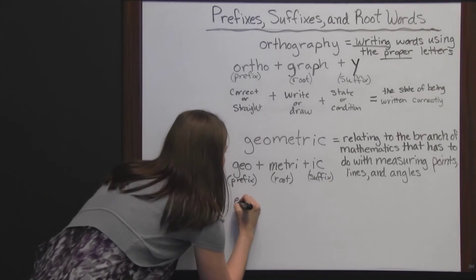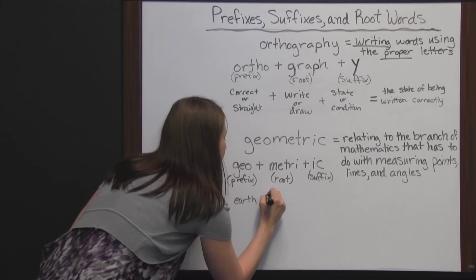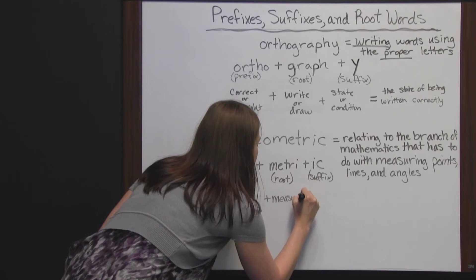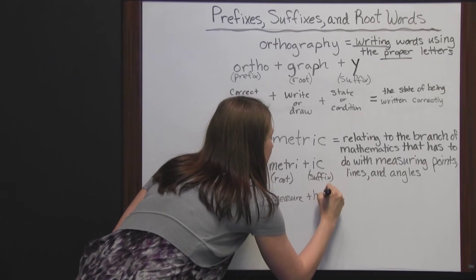Geo means earth, and we put that with metre, which means measure, and ick means having to do with.